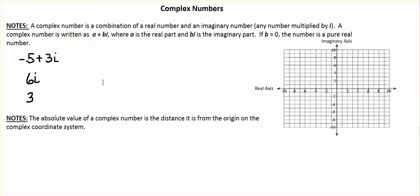A complex number is a combination of a real and an imaginary number. Any number multiplied by the letter i, we learned in the last lesson, is an imaginary number.